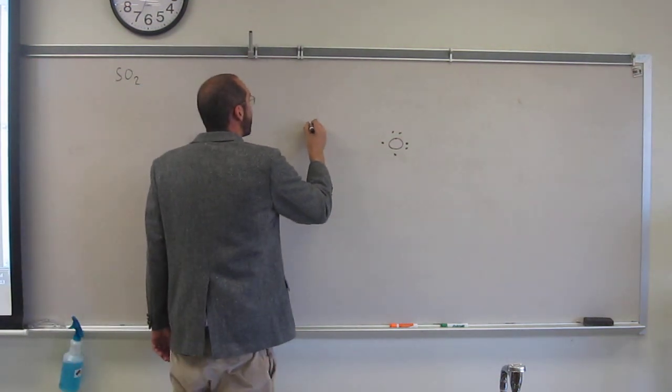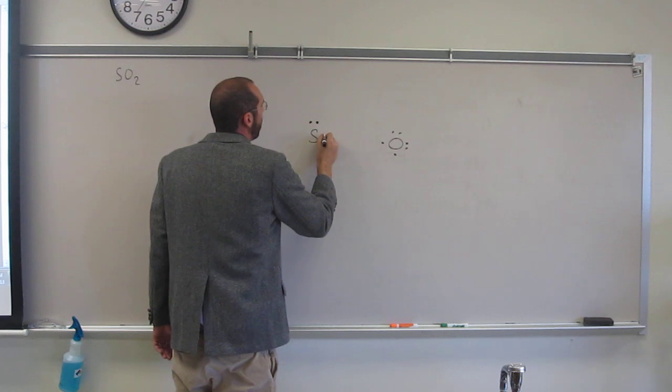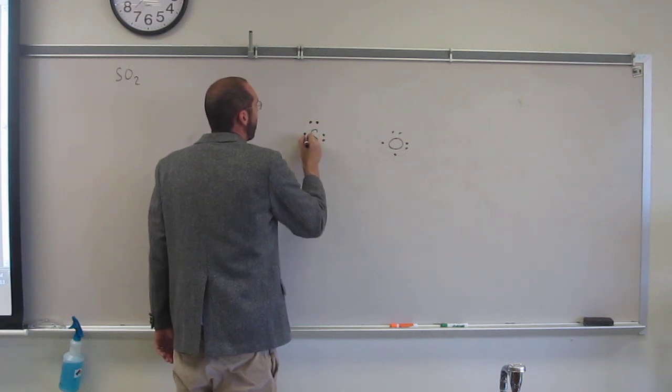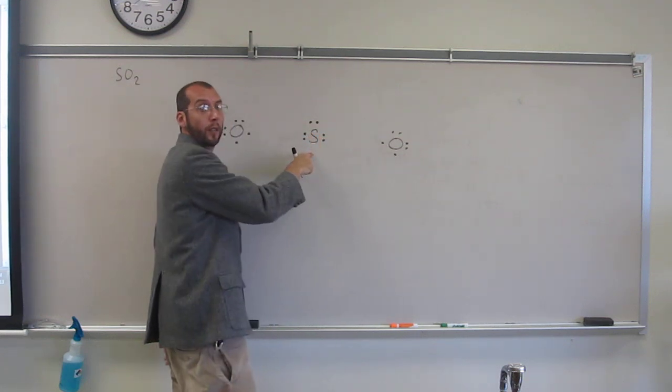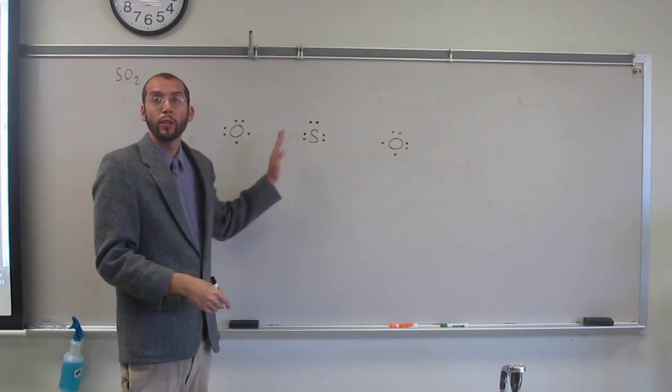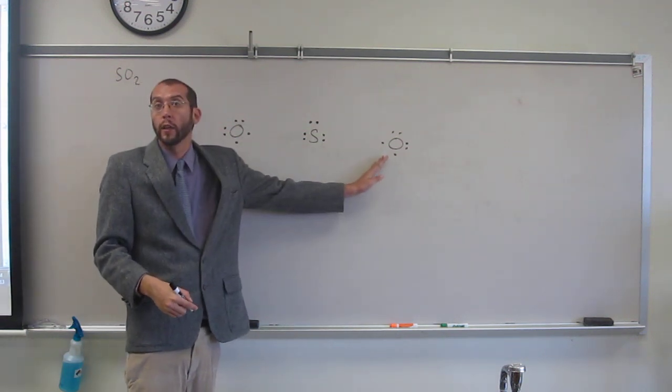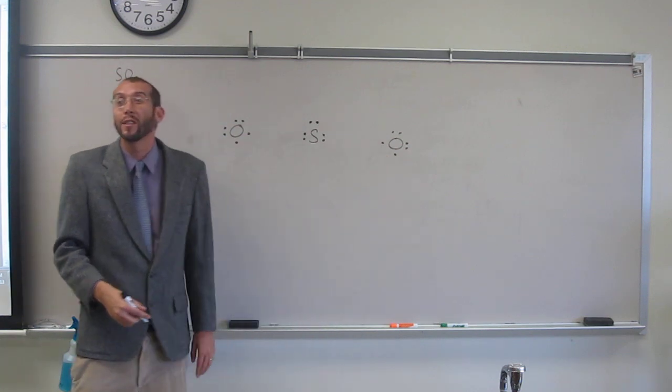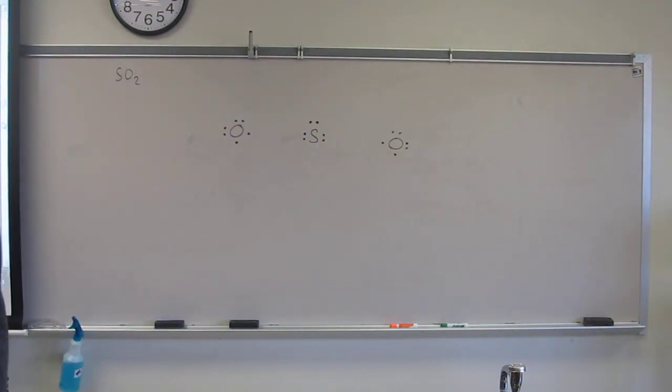But in this case, hopefully you notice, sulfur is missing two electrons. But oxygen needs two electrons, and oxygen needs two electrons. So since sulfur normally could only take two electrons, and we know this compound exists, we also know that sulfur must be expanding its valence, is what we have to assume. Is everybody okay with that justification?